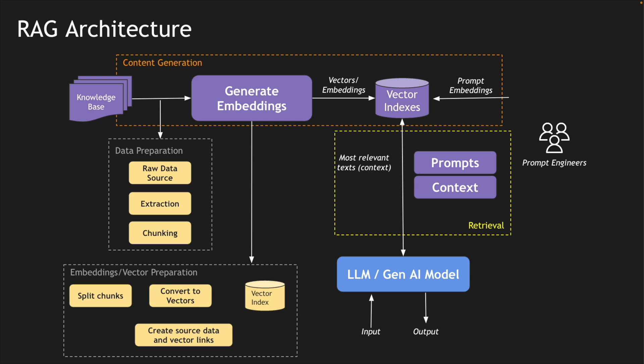Those vectors are leveraged by the LLMs to create context around the whole vector so that it is meaningful, stitched back, and sent to the user as output. This is how vector databases are leveraged in the AI architecture — this is the RAG architecture, Retrieval Augmented Generation. All LLMs leverage vector databases in some form, storing data as vectors.